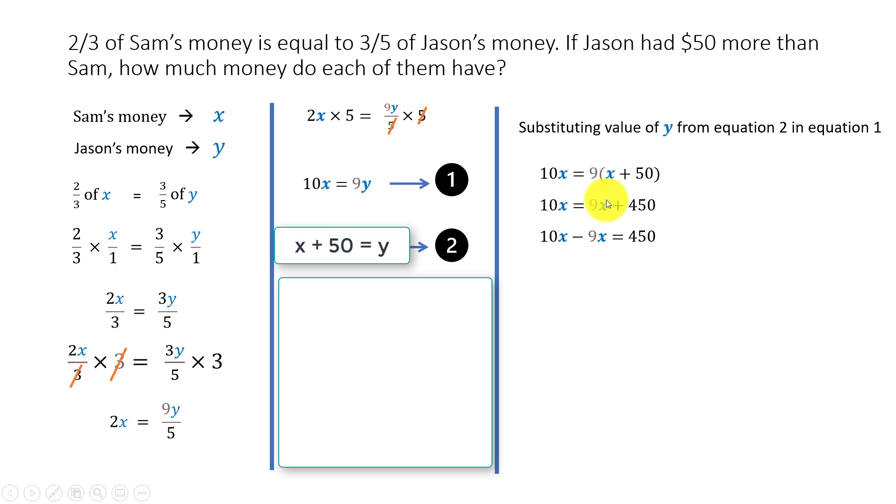I get 10X equals 9 times X is 9X plus 9 times 50 is 450. Now I can bring this 9X over here. 10X minus 9X. 9X is positive here, so when you bring it here, it becomes negative. 10X minus 9X is equal to 450, so X is equal to 450. We know that X is Sam's money. X represents Sam's money, so Sam has $450.